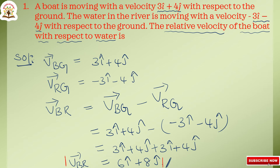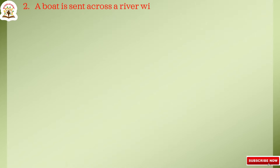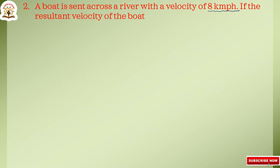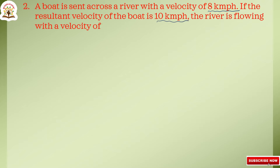Next, we will go to the second question. A boat is sent across a river with a velocity of 8 kilometer per hour. If the resultant velocity of the boat is 10 kilometer per hour, the river is flowing with a velocity of — you have to calculate. Let us go to the solution.